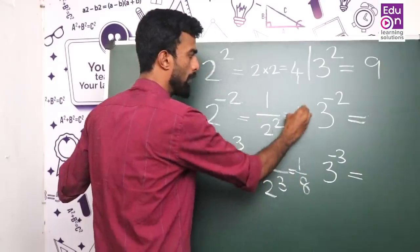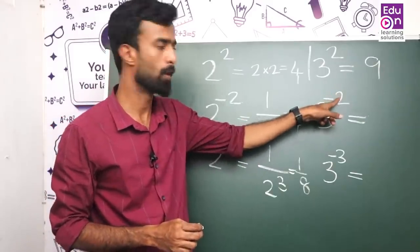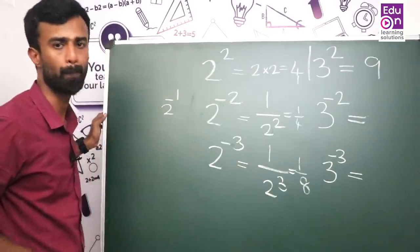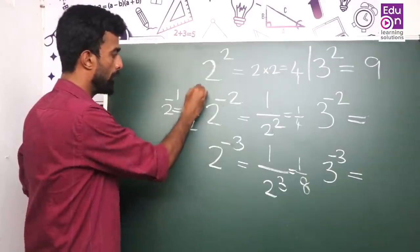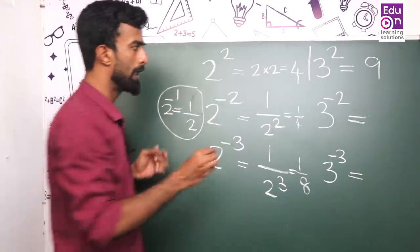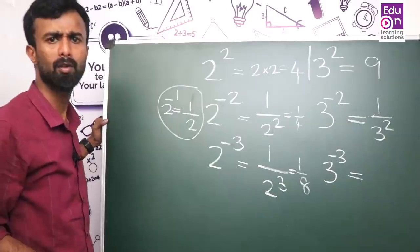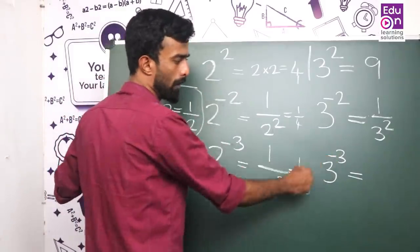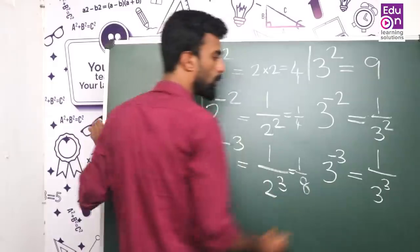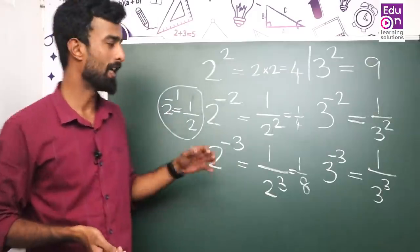1 by 4. Then 3 cubed: 3 times 3 times 3 equals 27.